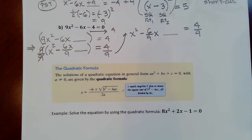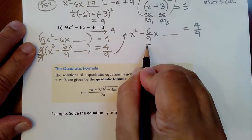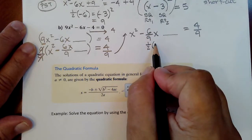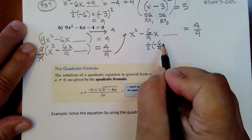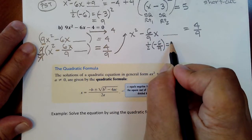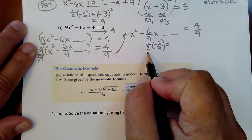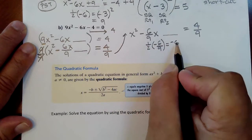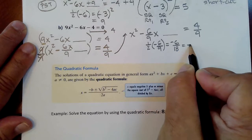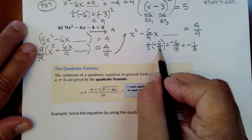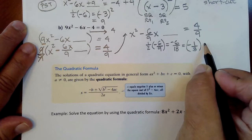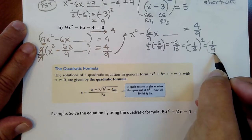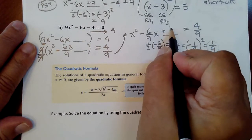Now we can jump into completing the square. We cut the coefficient of the linear term in half: negative 6/9 times 1/2 equals negative 6/18, which reduces to negative 1/3. Then we square it: negative 1/3 squared gives 1/9. That number — 1/9 — is the number that completes the square. We add 1/9 to complete the square on this family, and don't forget to add 1/9 to the other side as well.